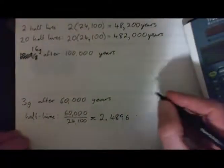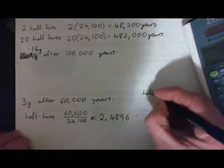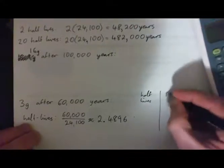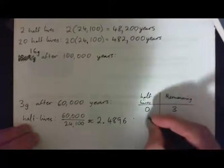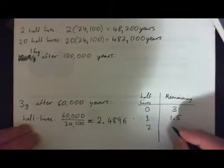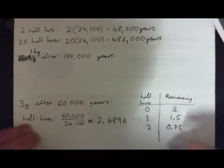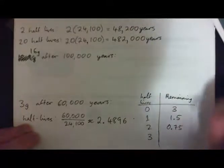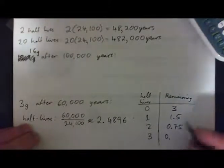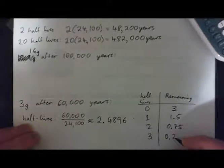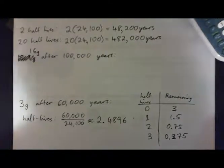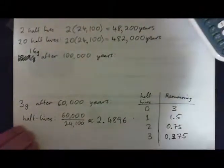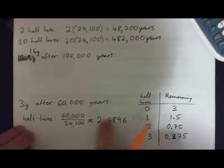That gives 2.4896. So it's about 2.4896 half-lives. And remember, if you have a quick table — half-lives versus how much is remaining — after no half-lives, we have 3 grams. After one half-life, we have 1.5 grams. After two half-lives, we've got 0.75 grams remaining. After three half-lives, we've got 0.375 grams. So we're in and around the 2 half-life area, a little over 2 half-lives — somewhere around there.